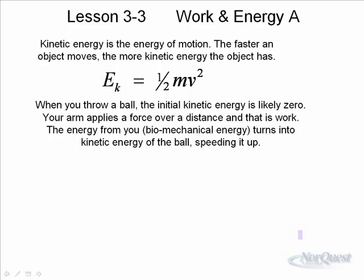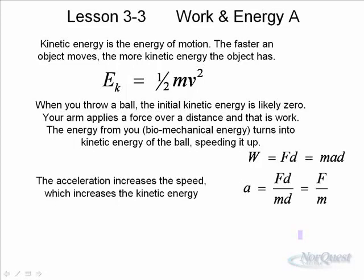There is an easy derivation of this formula. We take it from the definition of work from the previous page. We say that work is equal to Fd and that's equal to mad. But we also know that in kinematics, we had an equation that said that vf squared was equal to vi squared.